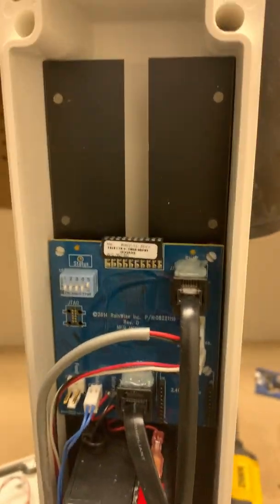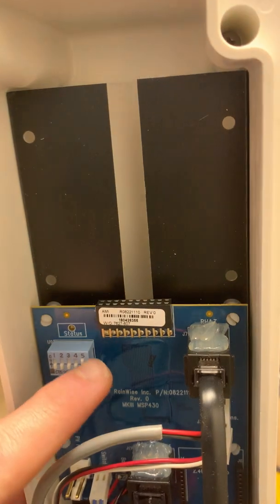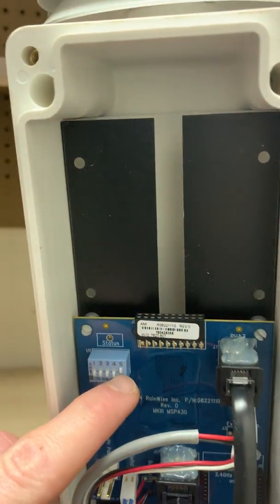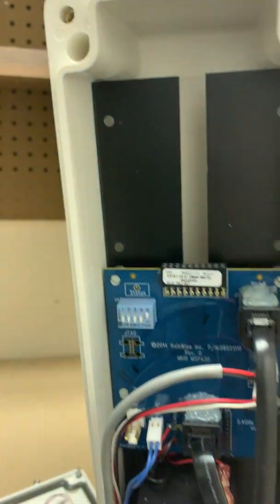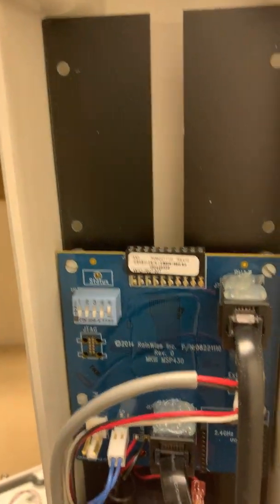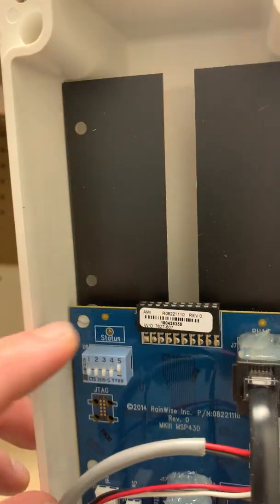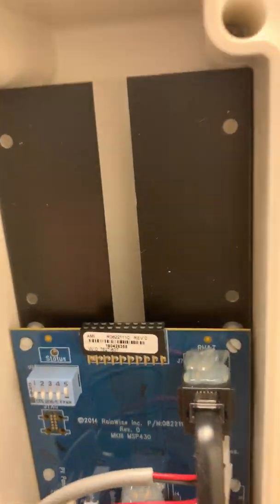Now most units, you would have all five of these dip switches down. This is a different frequency that's running on, so it is up. And as you can see, the status light is not on because we have turned off the unit.